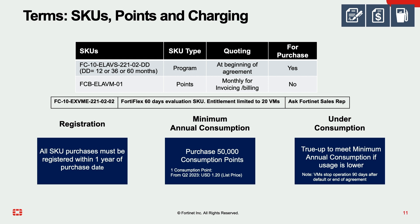These are the SKUs related to the MSSP program. A specific program SKU is to be purchased by the partner, and no point packages should be sold alongside. A separate billing SKU will be used to invoice the partner monthly for payment based on usage of consumption points. MSSP partners must make a minimum purchase commitment of 50,000 FlexVM points per year.